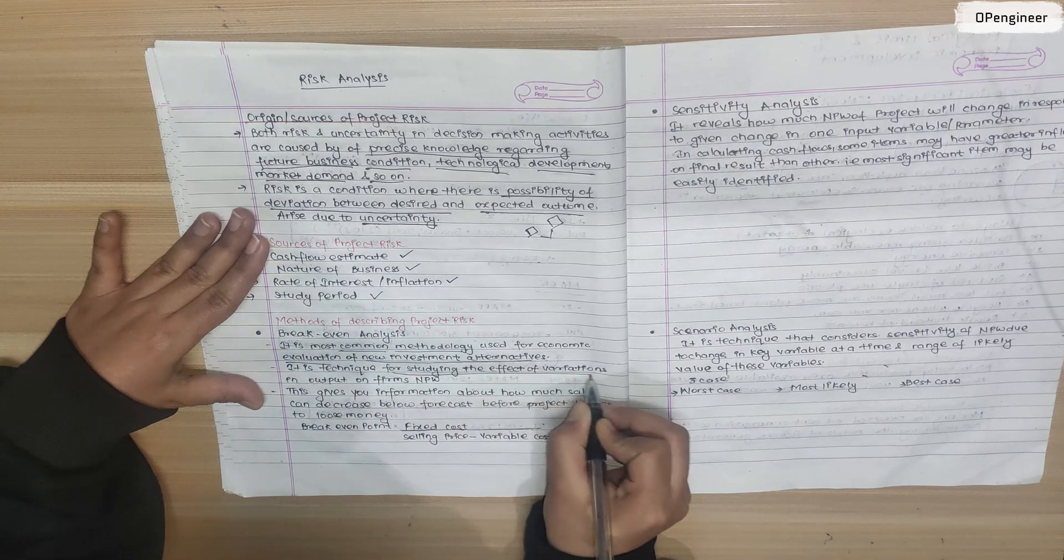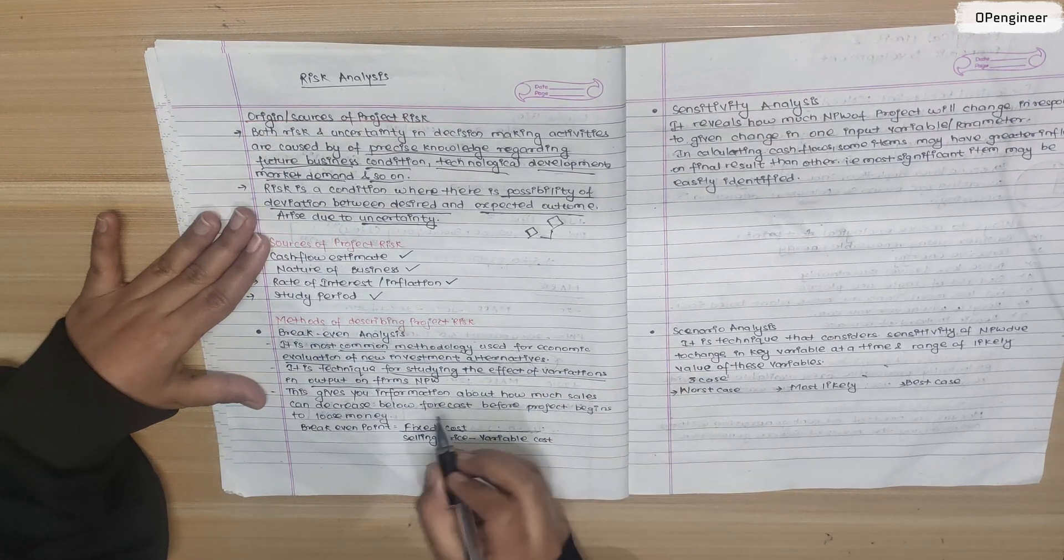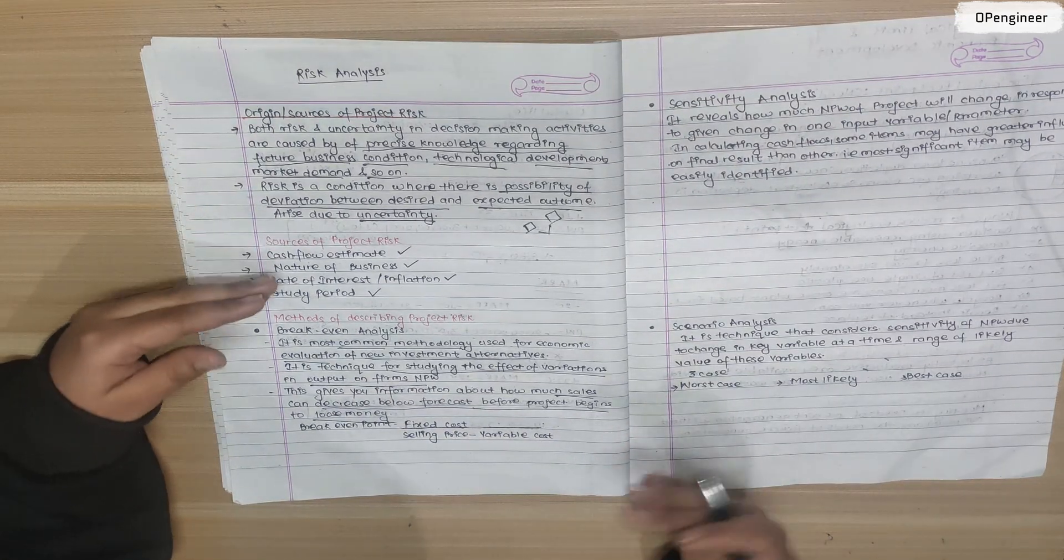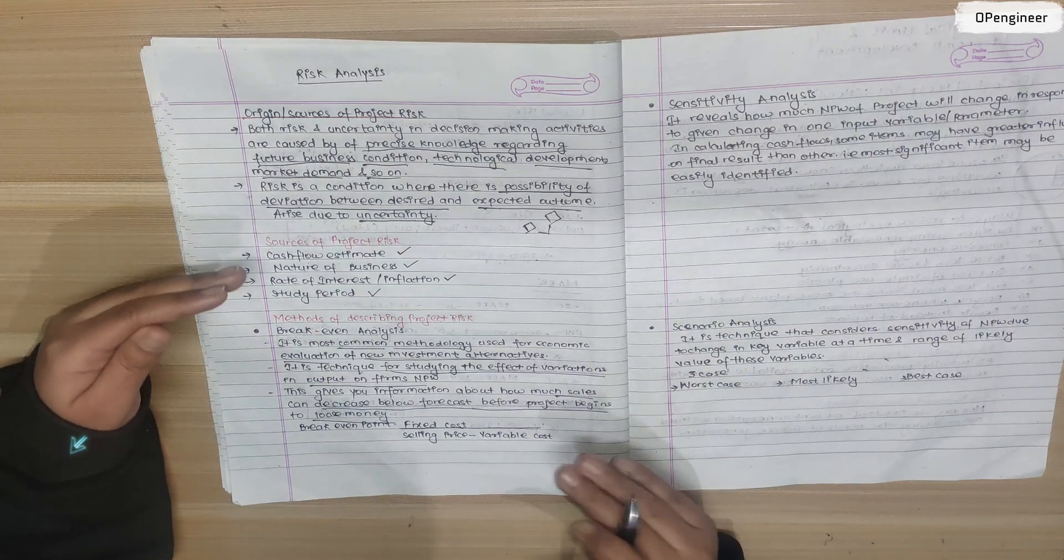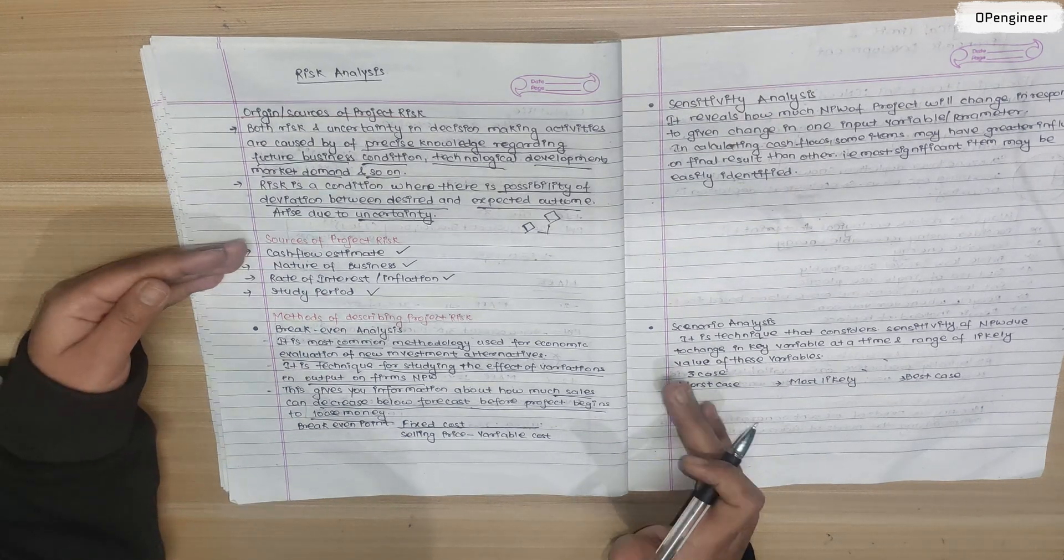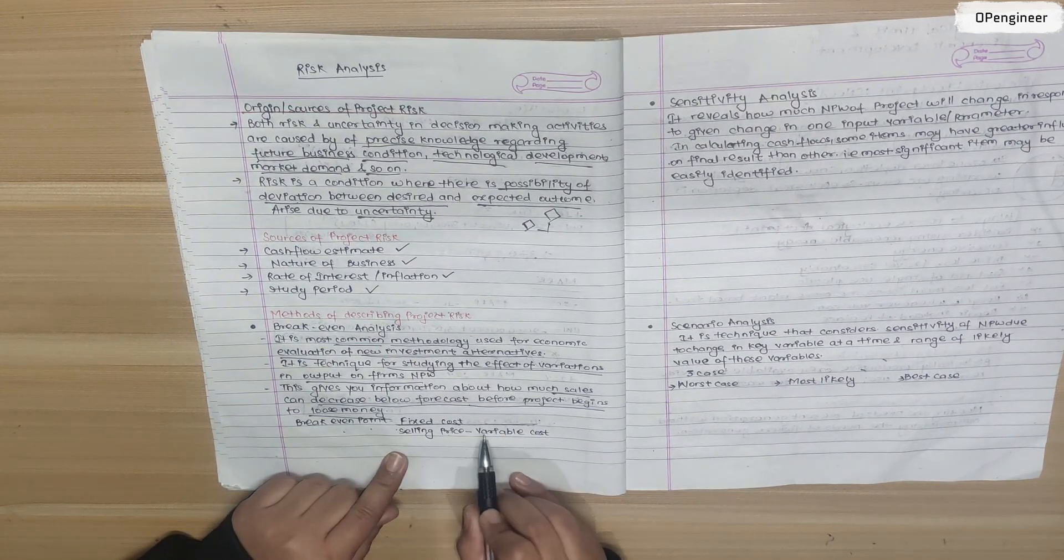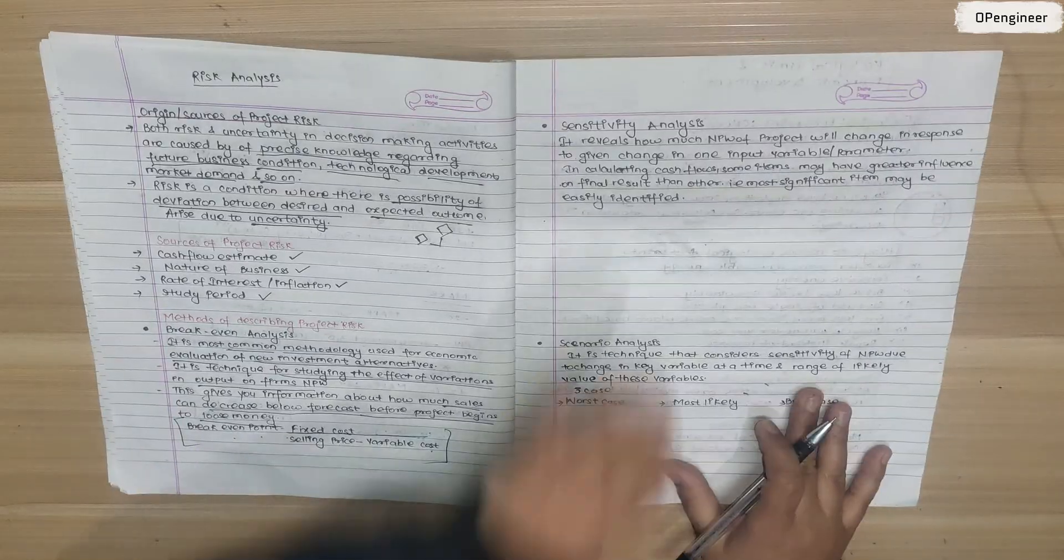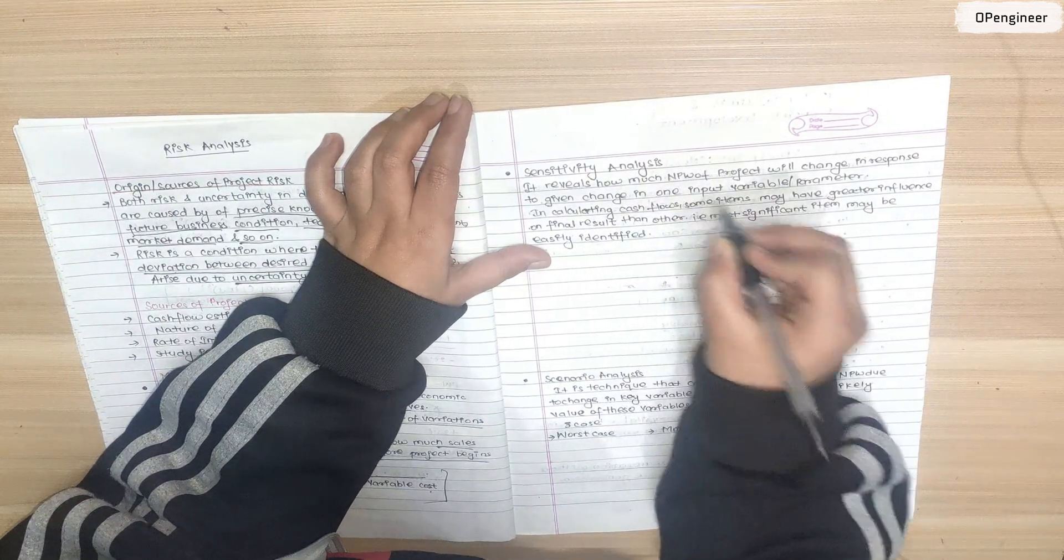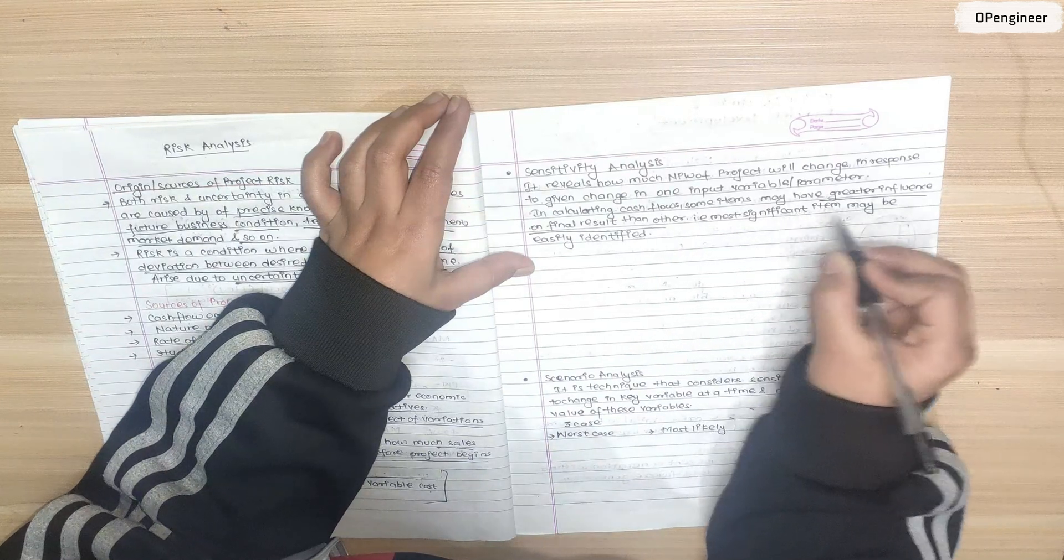It is a technique for studying the effect of variation in output on the firm. This is a technique where we study the outcome variation. It gives you information about how much sales can decrease below forecast before the project begins to lose money. Break-even analysis allows us to forecast and gives us information when we start a project.